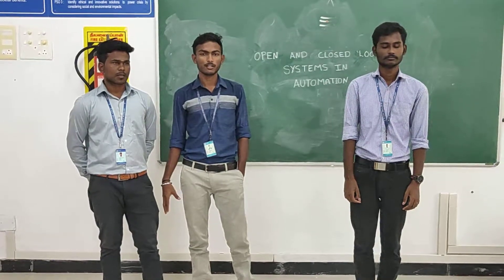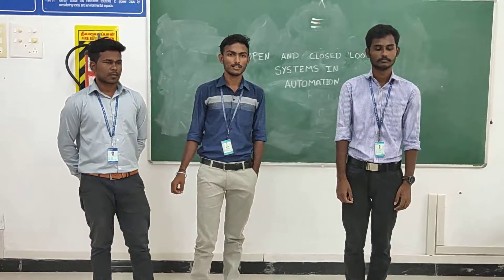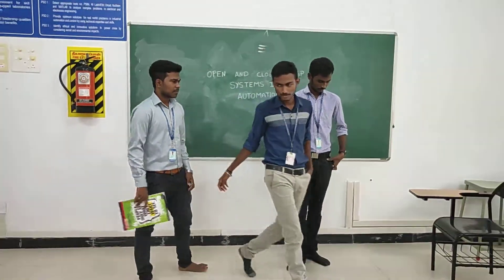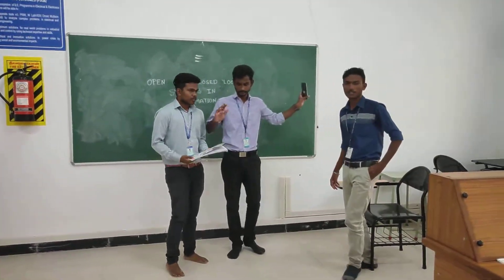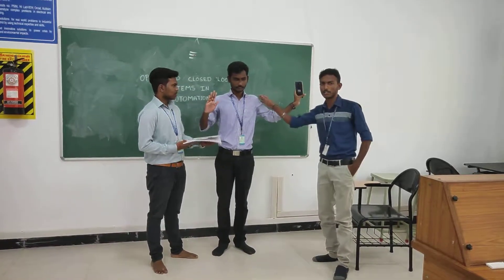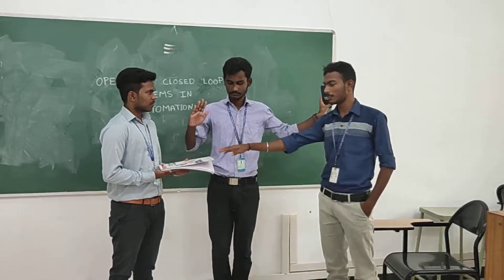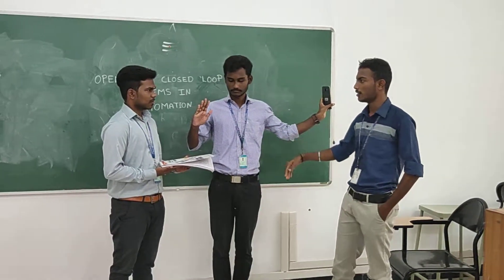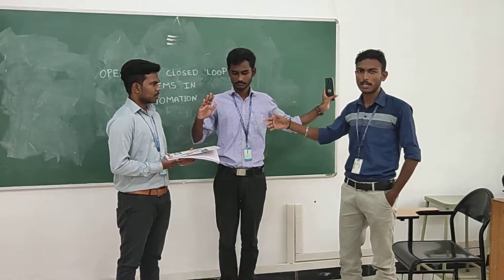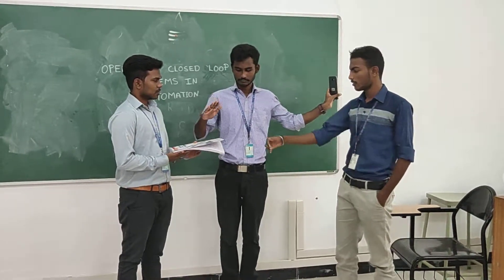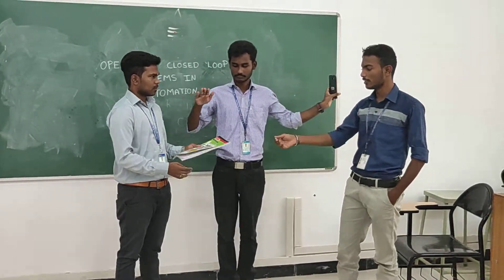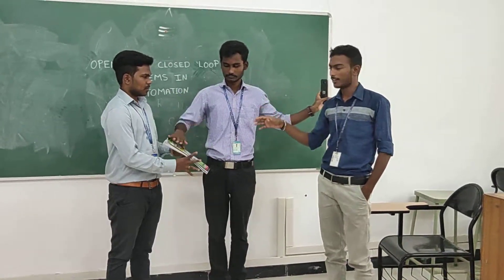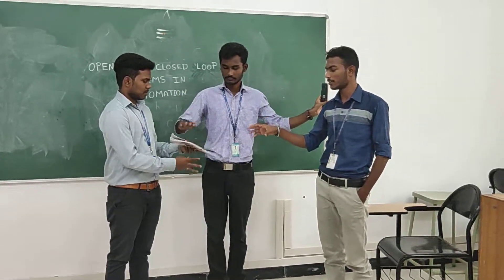We are going to see the manufacturing industry. In the manufacturing industry, the system is used to move the product. The robot will use to pack the product. When the conveyor speed is fixed, the robot cannot pack the product properly.